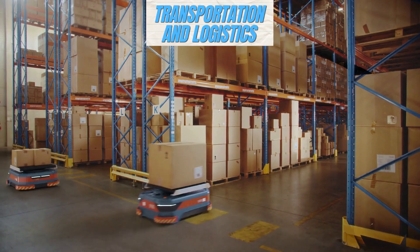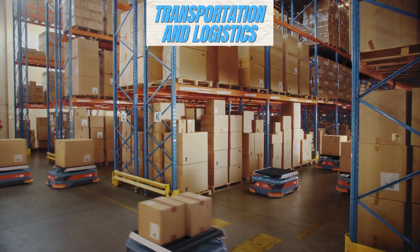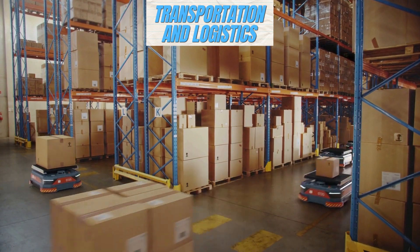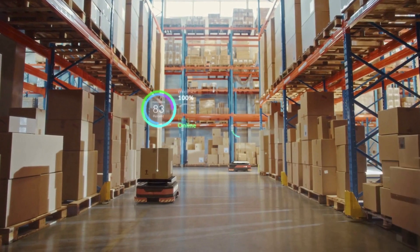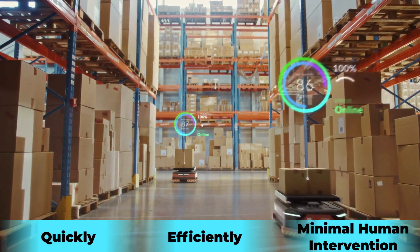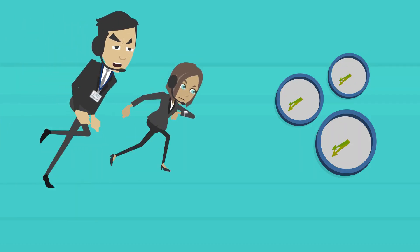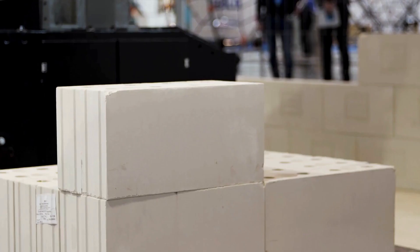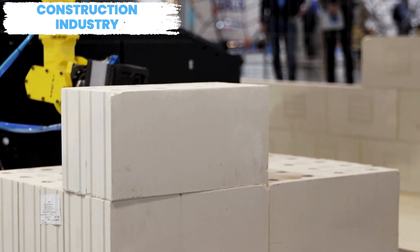In transportation and logistics, swarm robots could be used to optimize the distribution of goods and services. By working together, these robots could ensure that packages and products are delivered to their destination quickly, efficiently, and with minimal human intervention. This could ultimately reduce costs, save time, and improve customer satisfaction.